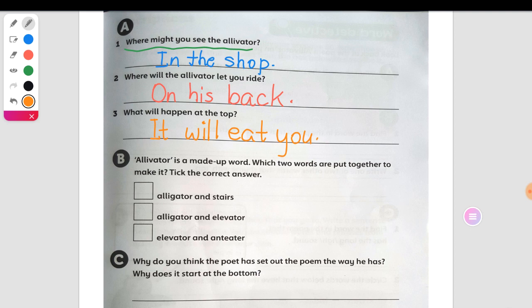B question. Elevator is a made-up word. It is a made-up word, as I told you. Which two words are put together to make it? We are going to take the correct answer from the following. Is it alligator and stairs? No. Very good. So, it's not.